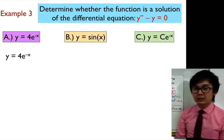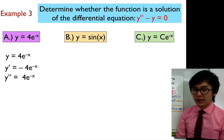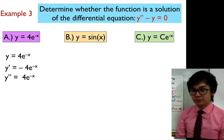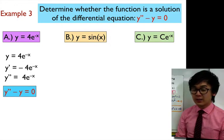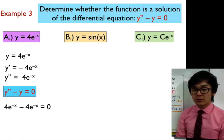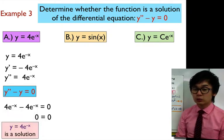For y = 4e^(-x), we need the first and second derivatives. The first derivative is y' = negative 4e^(-x), and the second derivative is y'' = 4e^(-x). Substituting into the differential equation: 4e^(-x) minus 4e^(-x) equals 0. Therefore, y = 4e^(-x) satisfies the differential equation and is a solution.